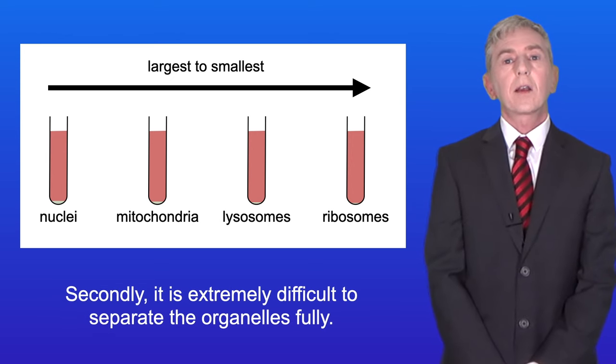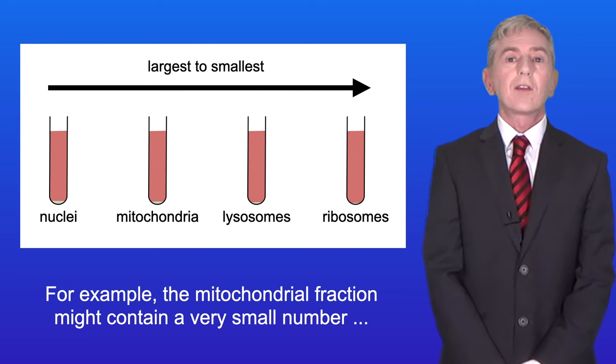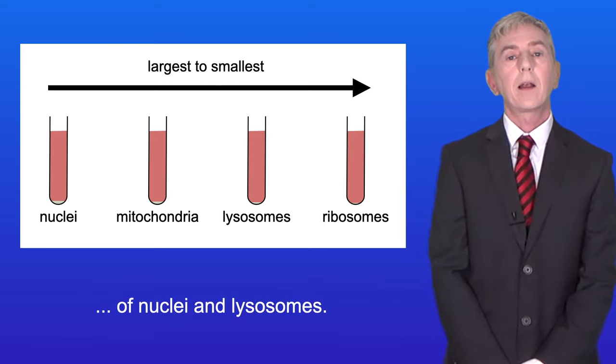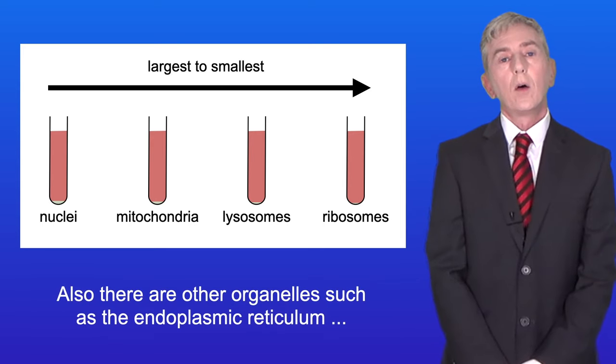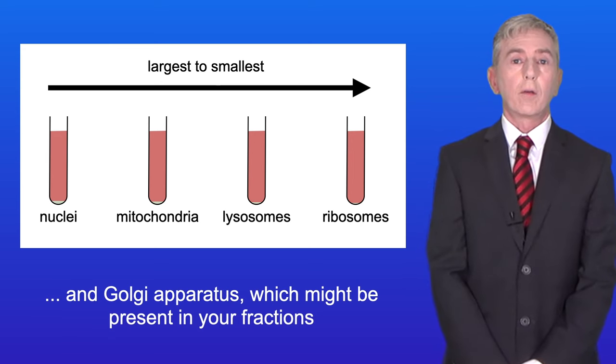Secondly it's extremely difficult to separate the organelles fully. So for example the mitochondrial fraction might contain a very small number of nuclei and lysosomes. Also there are other organelles such as the endoplasmic reticulum and Golgi apparatus which might be present in your fractions.